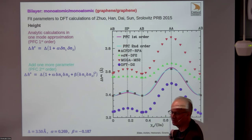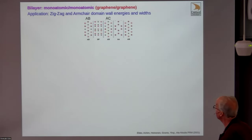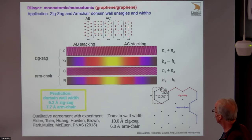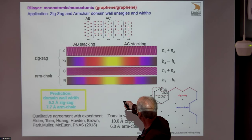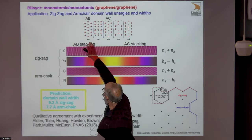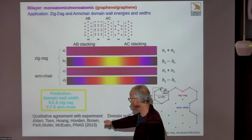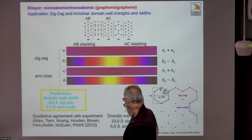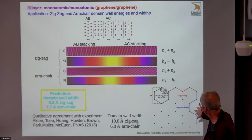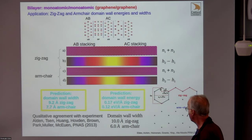One thing we can now look at is domain wall energies. The AB stacking is the lowest energy state. If you start one side of the system in AB and the other side in the equivalent but shifted AB stacking, you get a domain wall between them. We got interested in this because experiments found the domain wall widths differ for zigzag versus armchair orientations—roughly 10 nm versus 6 nm. Our values aren't quite as large, but we can predict the energies of these domain walls, which are quite small.